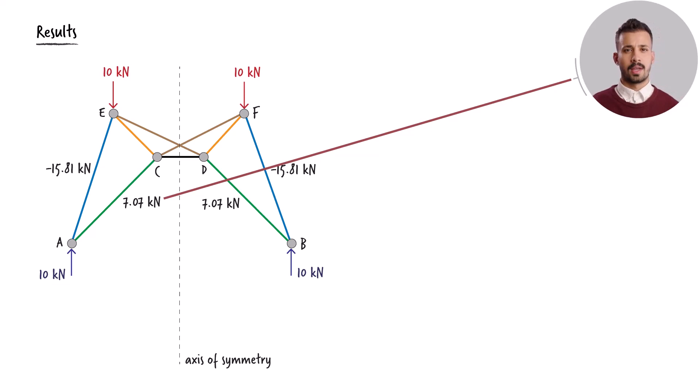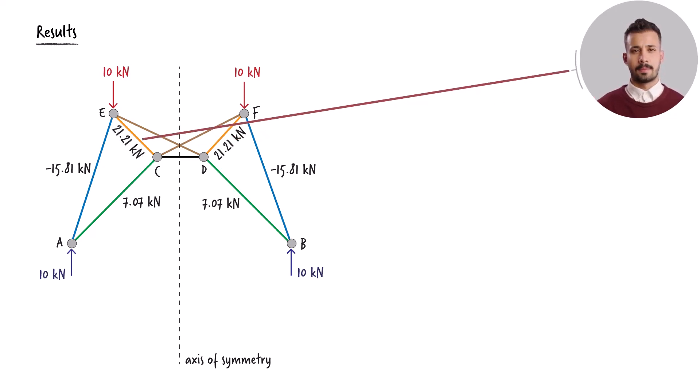For member DF, the internal force is 21.21 kilonewtons, and this is matched by member CE. Finally, with member CF experiencing a compressive force of 22.36 kilonewtons, it follows that member DE is under a compressive force of the same magnitude, 22.36 kilonewtons.